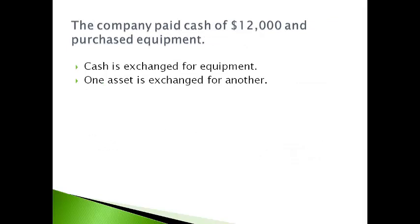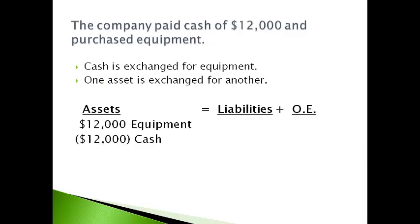The company paid cash of $12,000 and purchased equipment. In this transaction, the company has more of one type of asset and less of another asset. The accounting equation stays in balance.